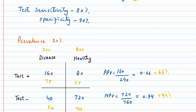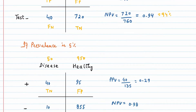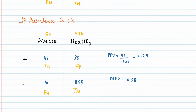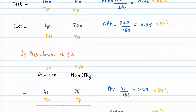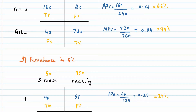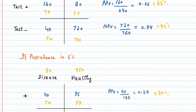Now suppose we have another area in which the prevalence of the same disease is 5%. In that situation, the people with disease will be 50 and healthy people will be 950. When we calculate the positive predictive value, this will be only 29% in this case, and the negative predictive value will be 98%. We can see that although the total population and sensitivity and specificity of the test are the same in both populations, the change in prevalence of disease affects the predictive values.